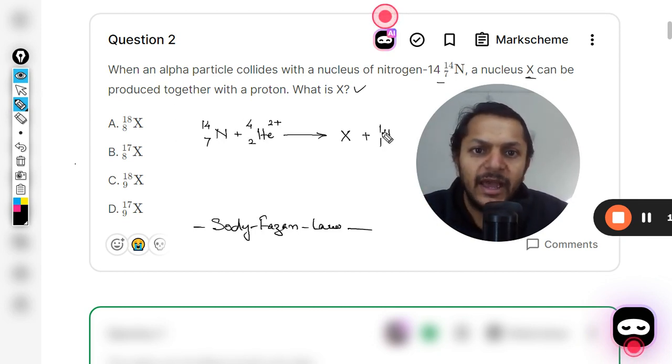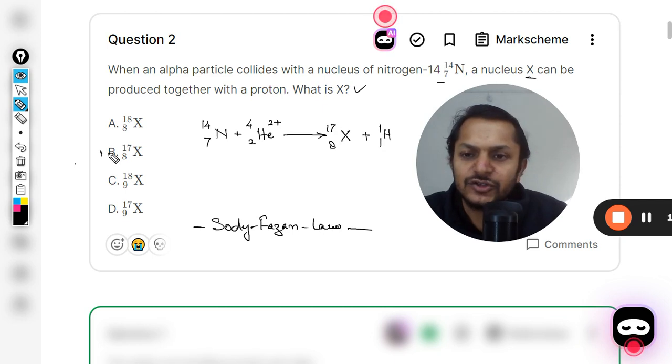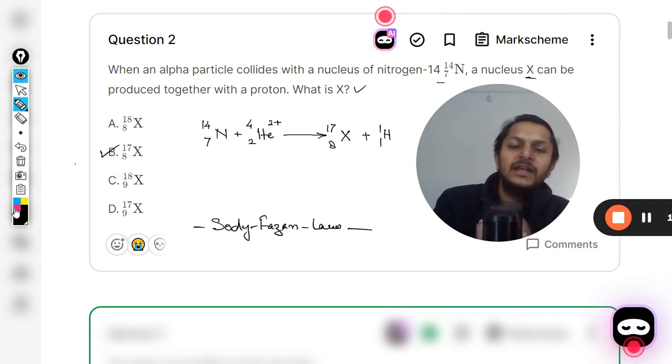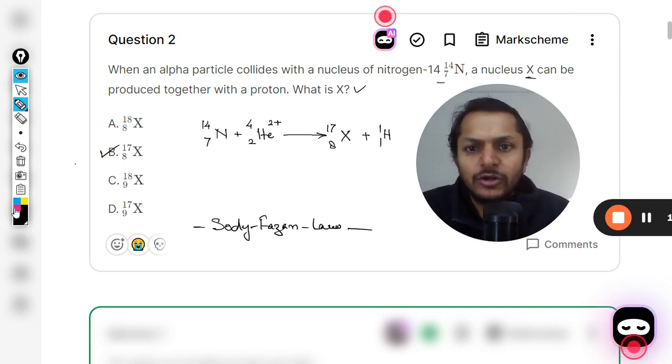So 7 plus 2 is 9, and 1 goes here, so 9 minus 1 is 8. So ¹⁷₈X. So B will be the correct answer. This is how we do it. You might already be knowing this rule but not by name. The name of this rule is Soddy-Fajans rule.